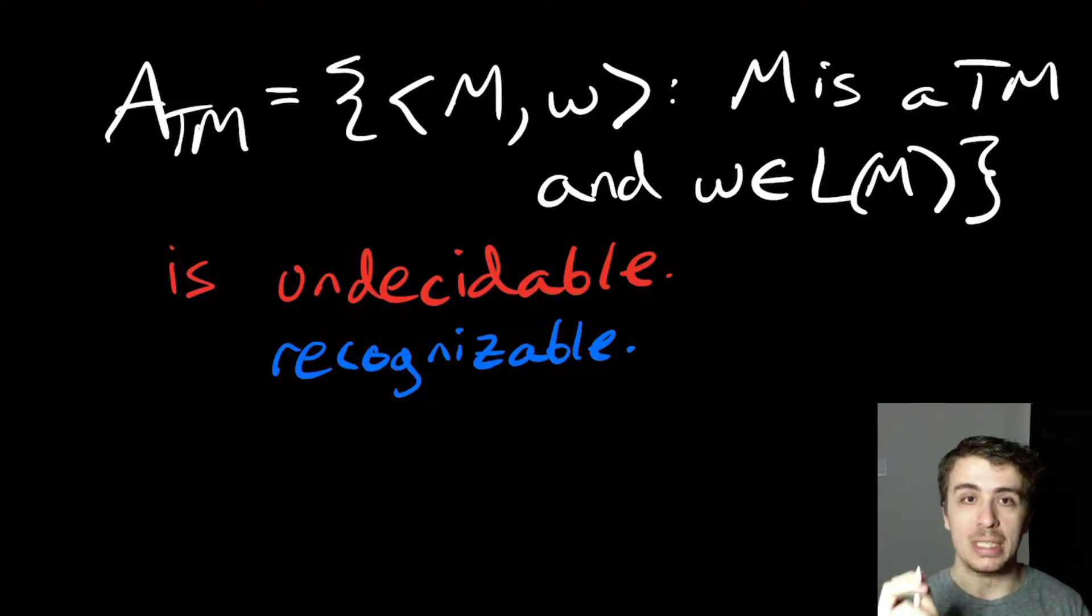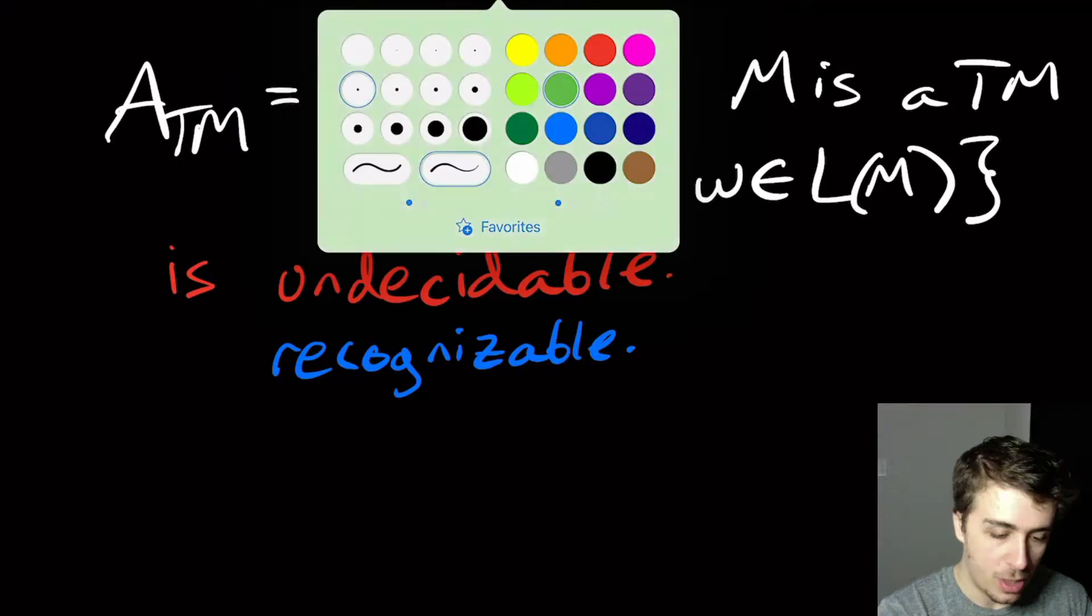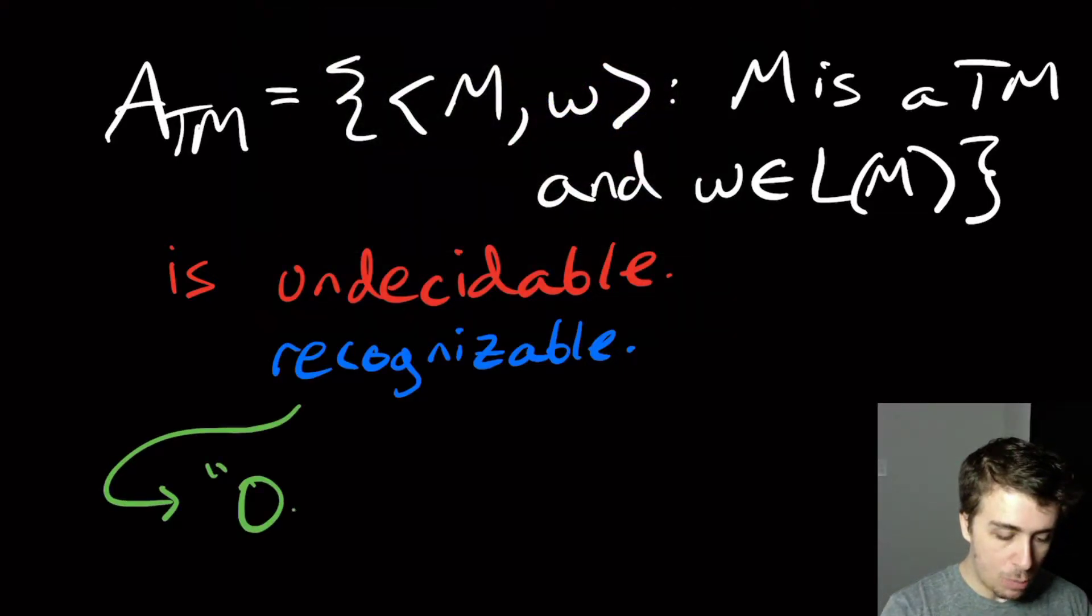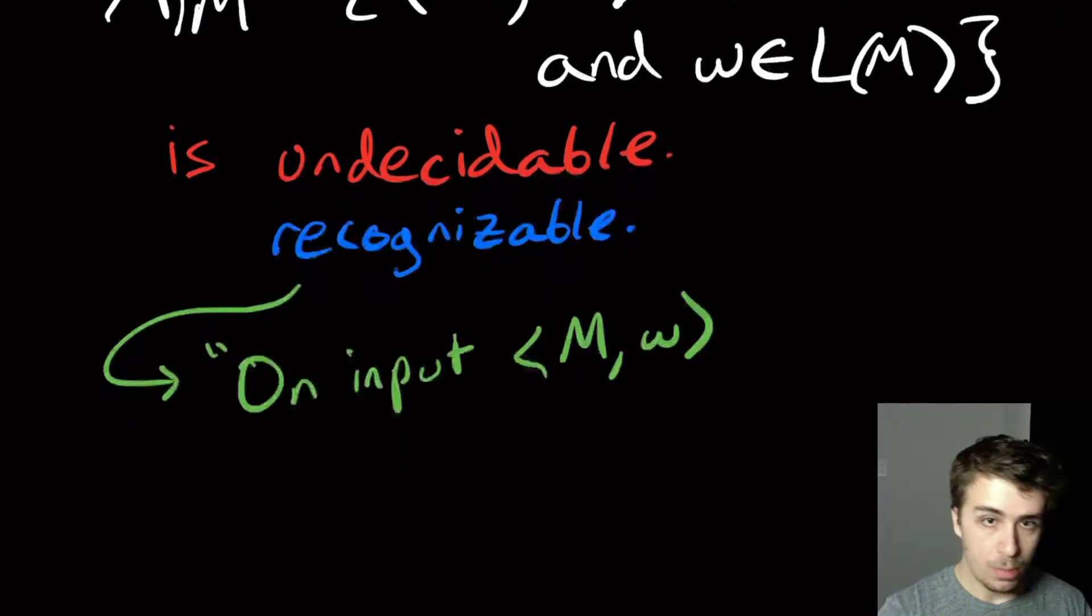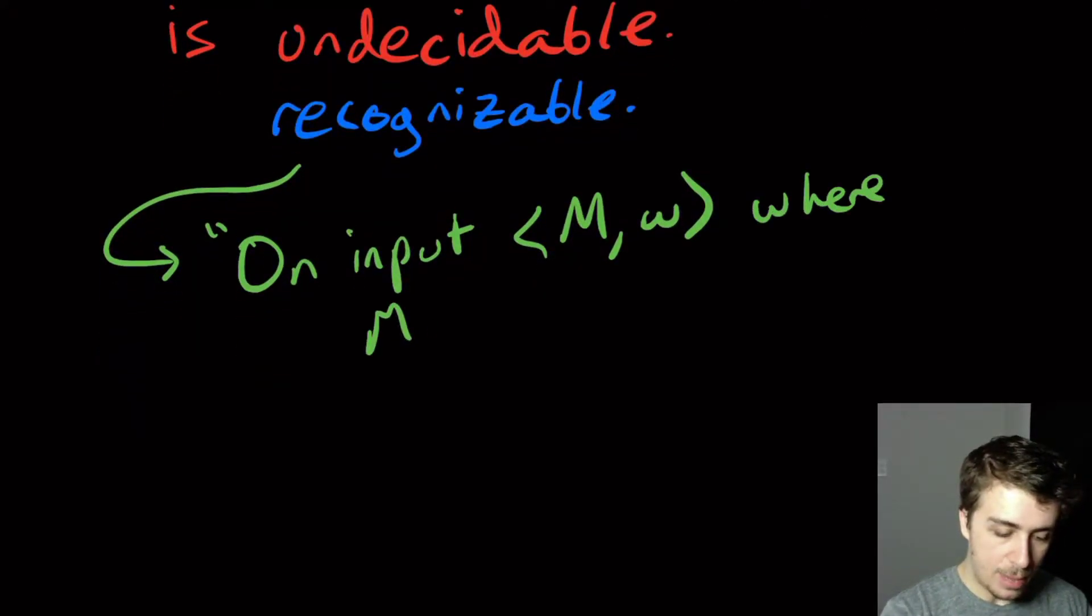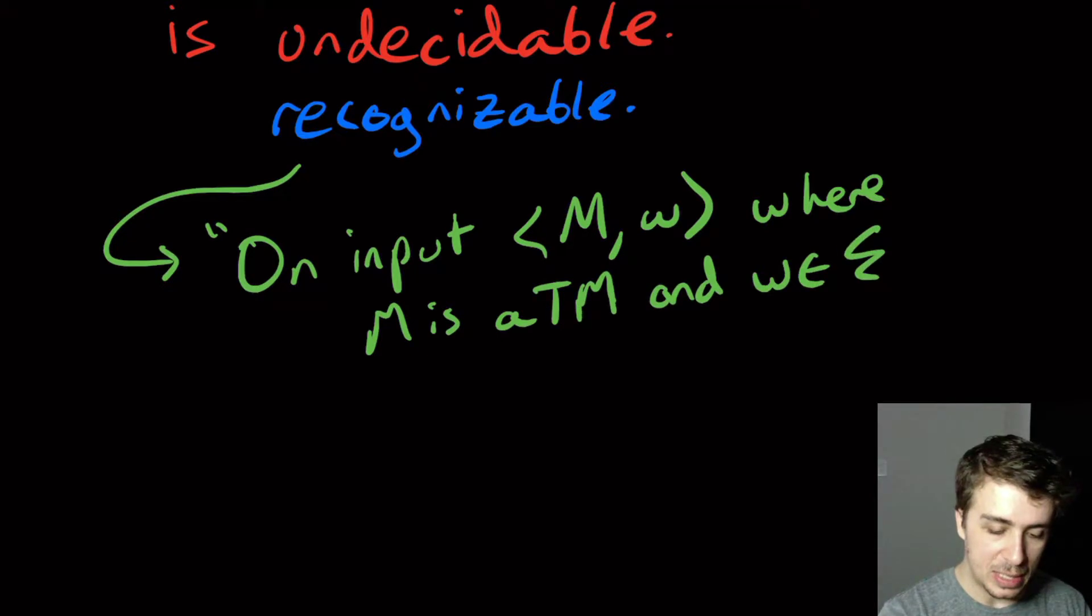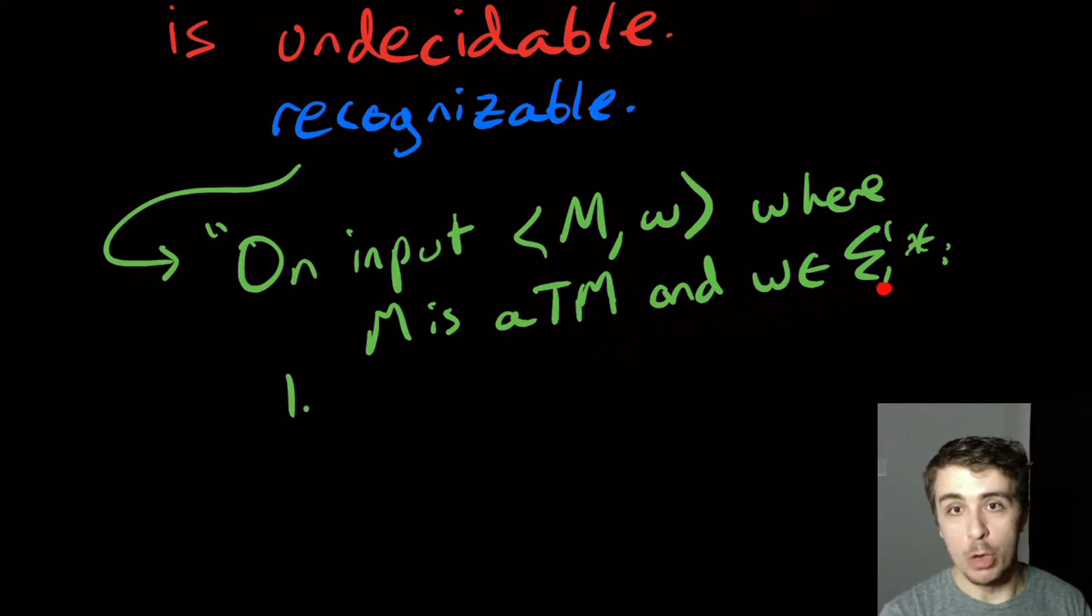Well, if the Turing machine does say yes on that input W, it does enter the accept state, then it will have a computation in accepting one. Therefore, we will reach there in a finite amount of time anyway. So what we could do is just simulate the darn thing. So how do we actually show this? We will present a recognizer here on input M and W. And I got to say what these are, where M is a Turing machine and W is any old string. It may or may not be in the language of M. I can't say W in the language of M here. I have to just say it's an arbitrary string.